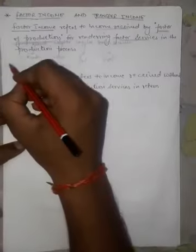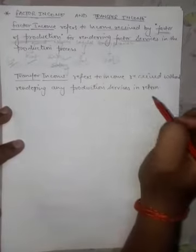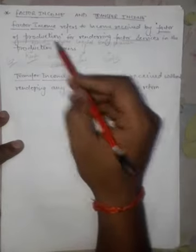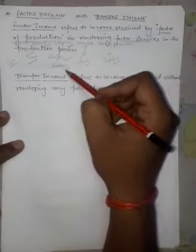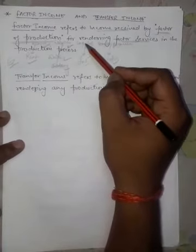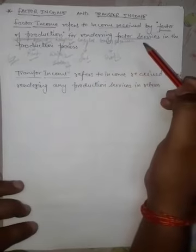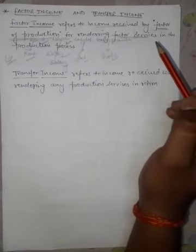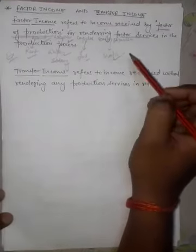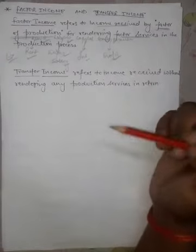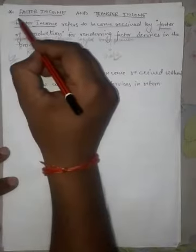The examples of factor income are rent, wages, salary, interest, and profit. Rent is received when we give our land on rent. Wages and salary are received in return for our labor and effort. Interest is received in return for providing capital. And if we utilize that capital as an entrepreneur and invest it in our own business, we receive profit. Income received in return for doing something — that is factor income.